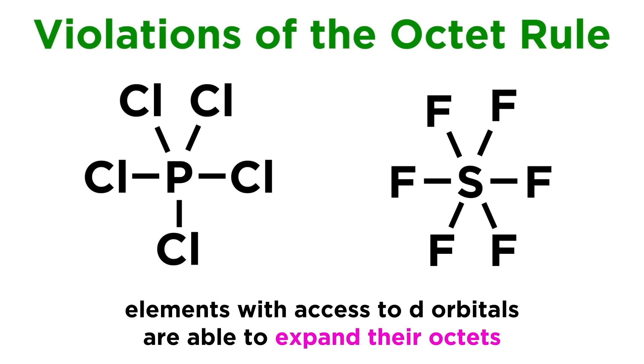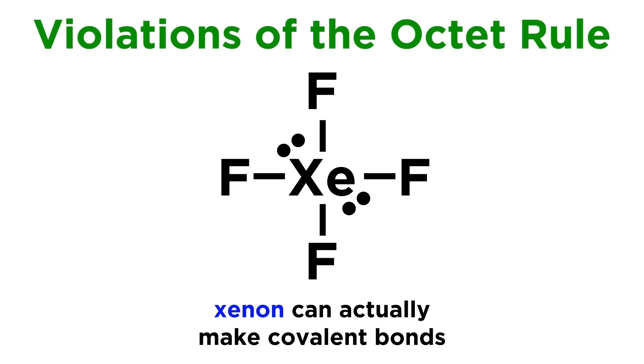This happens because these elements have access to d orbitals, whereas elements in period 2 like carbon and oxygen do not, so these elements will commonly make five and six covalent bonds respectively. Even xenon, a noble gas, which we would expect to be inert, actually can make covalent bonds with select other elements, such as with the compounds shown here.